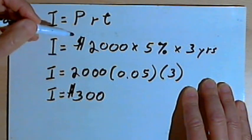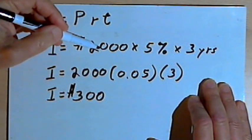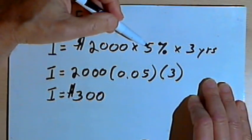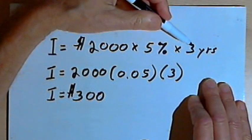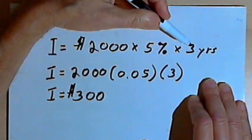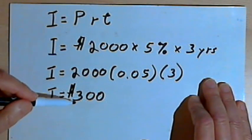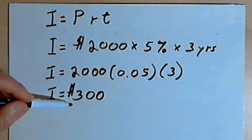So in other words, if we invested $2,000 at a rate of 5 percent for a period of 3 years, we would end up earning $300 in interest.